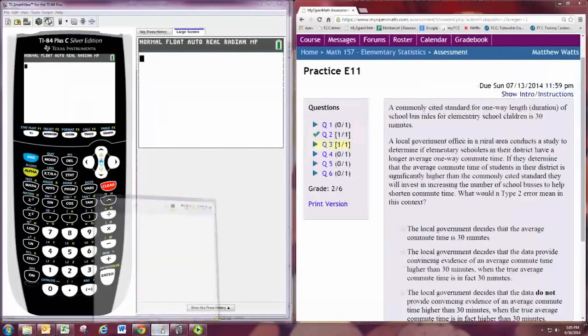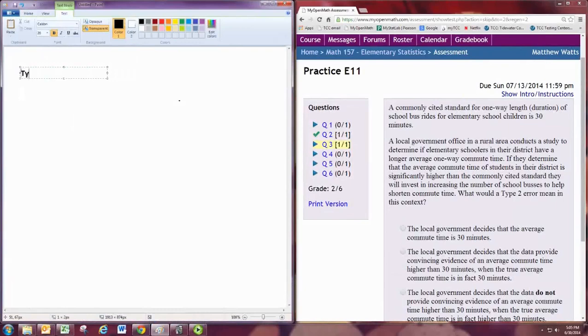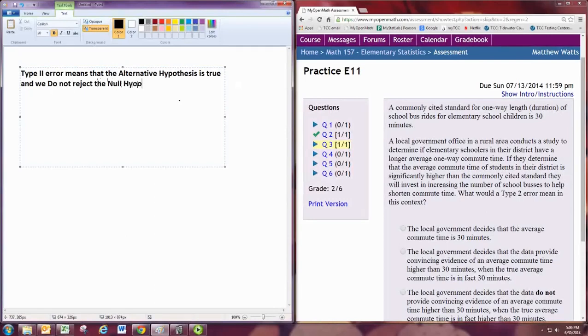Let's recall that a type 2 error means that the alternative hypothesis is true, and yet we do not reject the null hypothesis. Remember that if we reject the null hypothesis, we would support the alternative, which is what you'd want when it was true. So, what are the hypotheses in this problem?